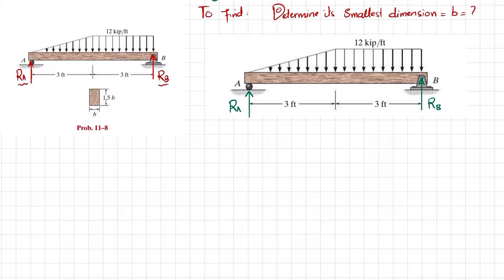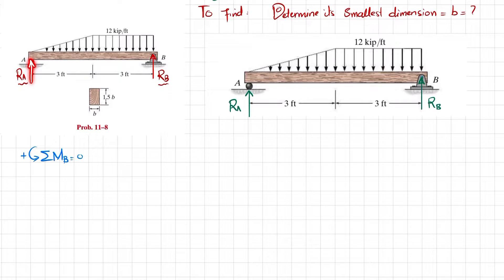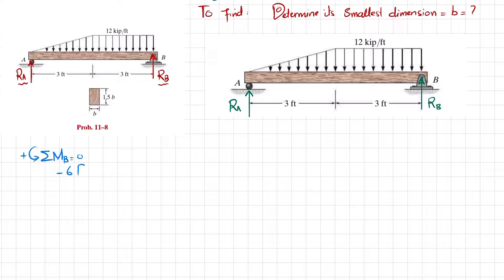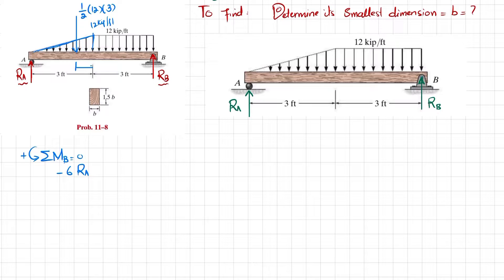Applying the equilibrium condition: the sum of all moments about point B equals zero, taking counterclockwise as positive. RA acts at 6 feet producing a clockwise moment: −6·RA. The uniformly increasing load is converted to a point load of (1/2)·12·3 = 18 kips, acting at 1 foot from the right (l/3 = 1 ft).